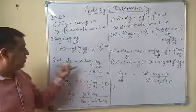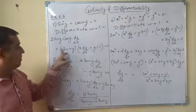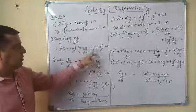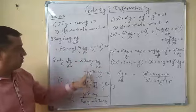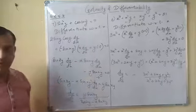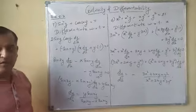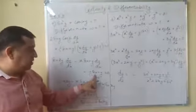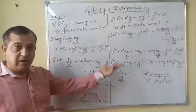Note that opening the bracket gives a minus sign for sin, so the signs are carefully tracked — positive and negative terms combine to yield the final expression for dy/dx.